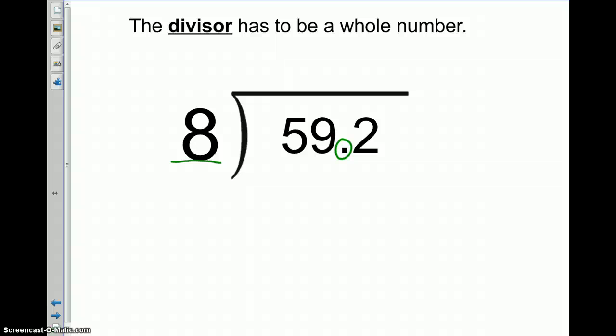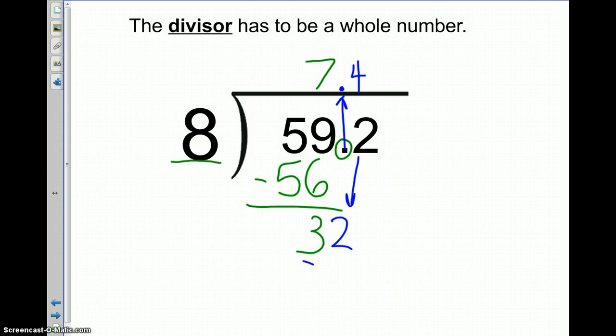So how many times does 8 go into 59? Well, it's going to be the same process. 8 times 7 is 56. 59 minus 56 is 3. Bring the 2 down. How many times does 8 go into 32? It goes in there 4 times. Now this decimal is lined up. 4 times 8, 32, 0. So 59.2 divided by 8 comes out to be 7.4.